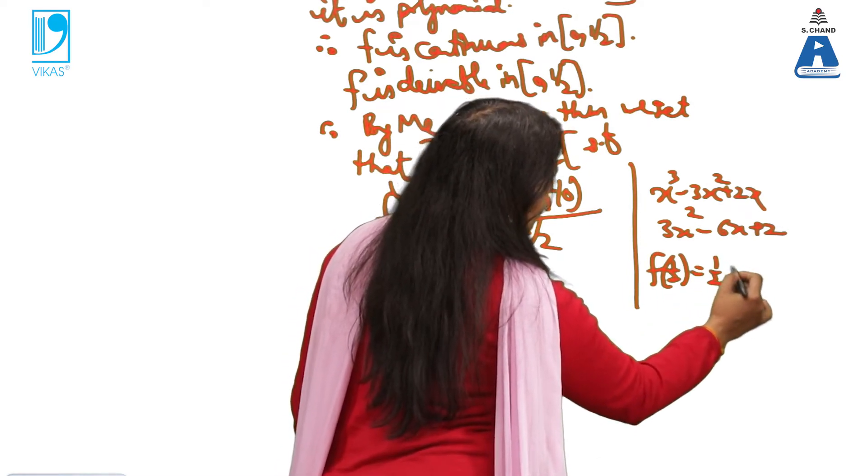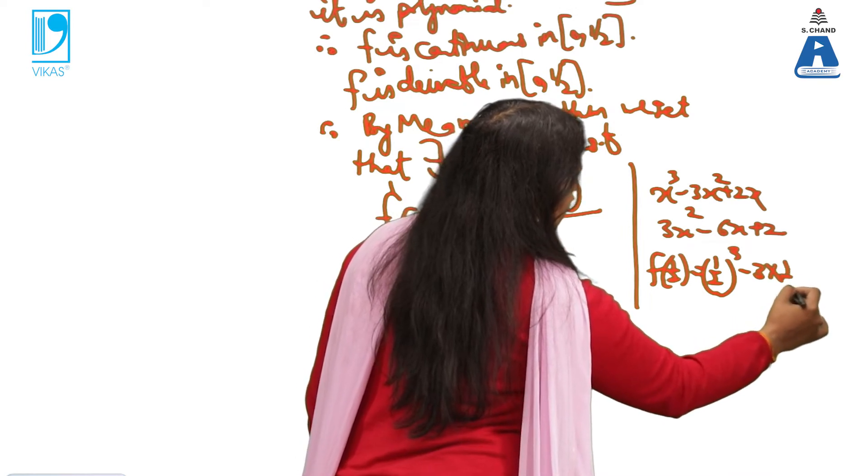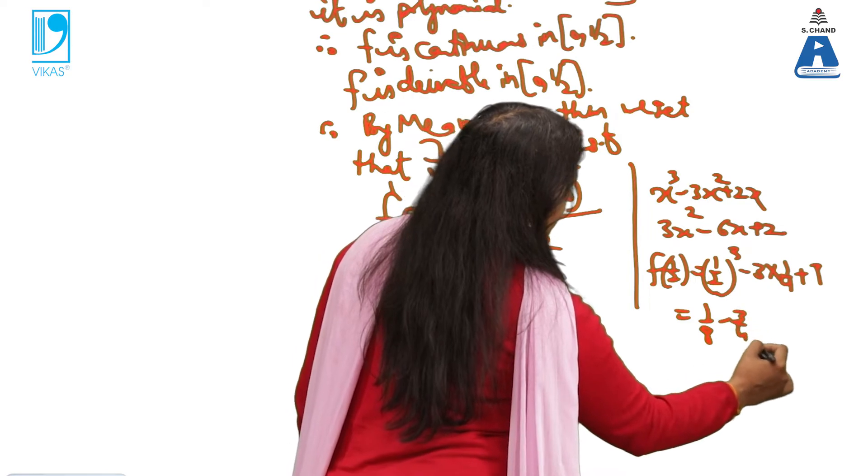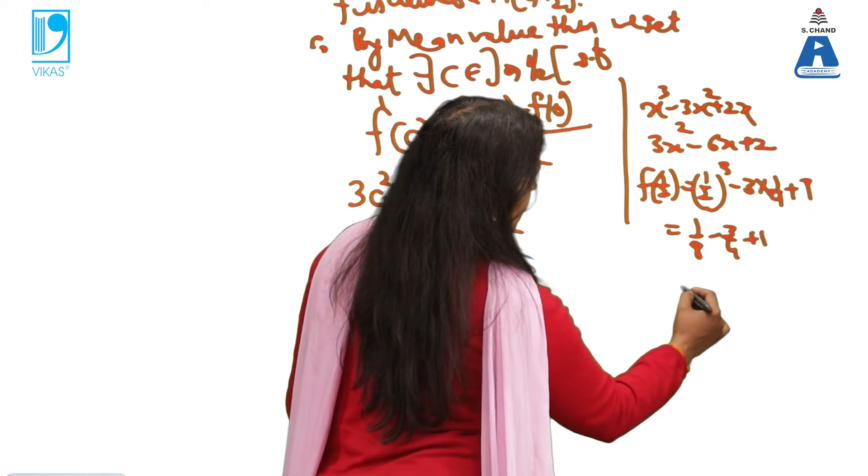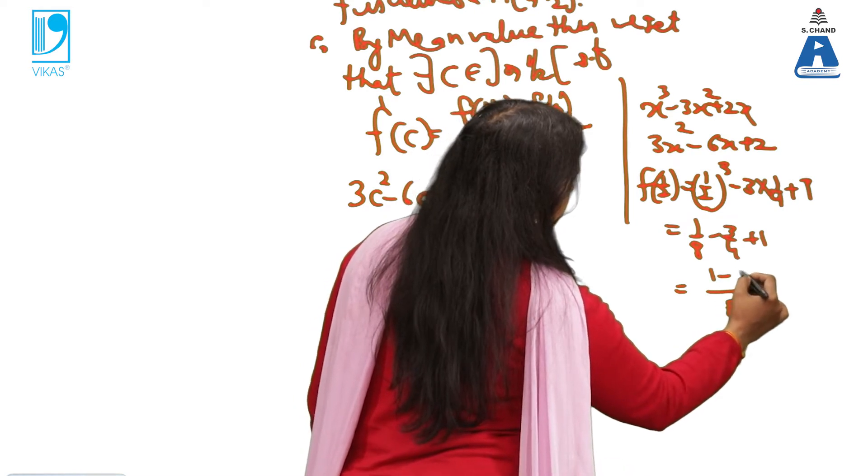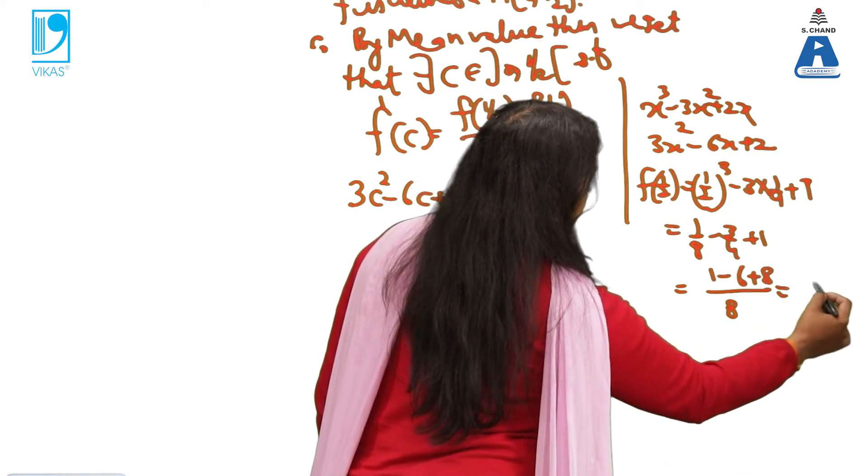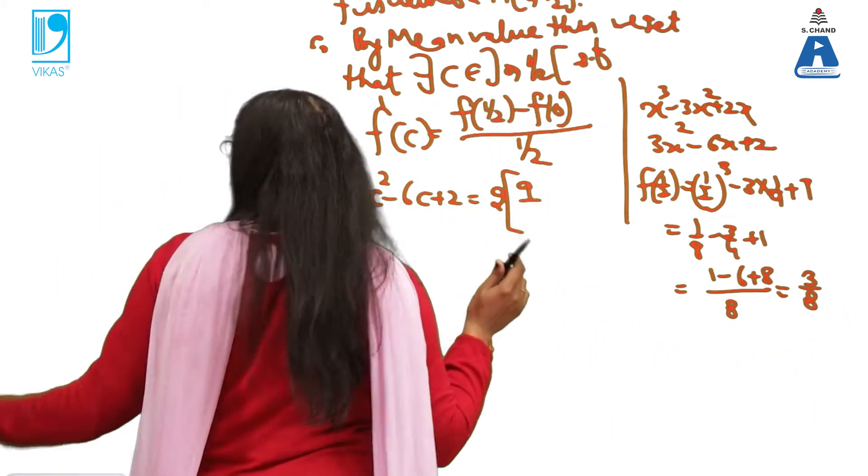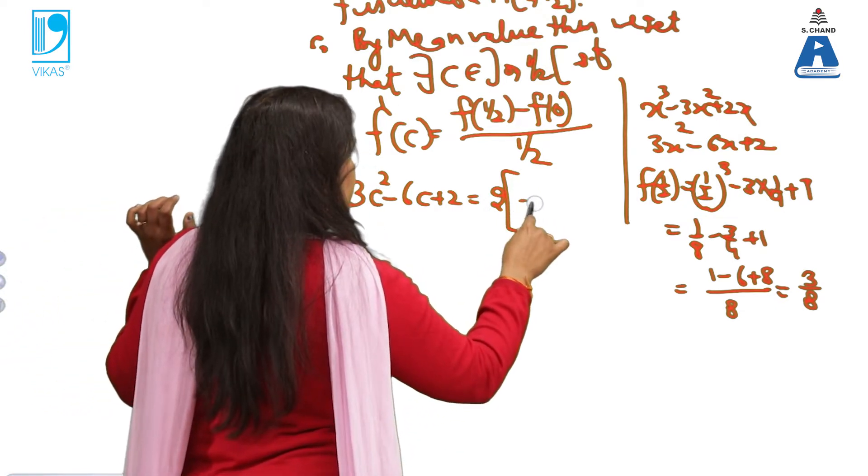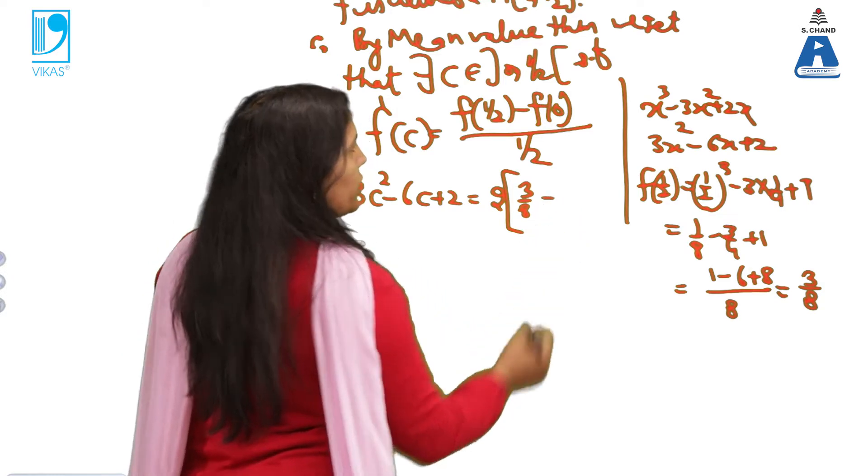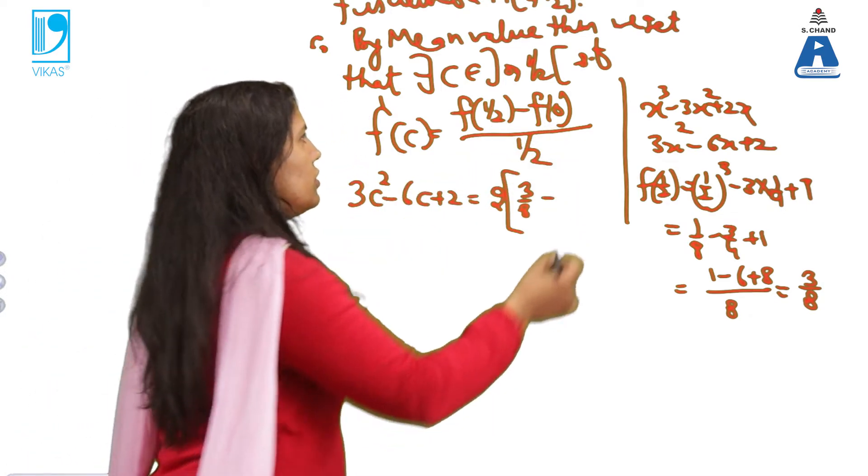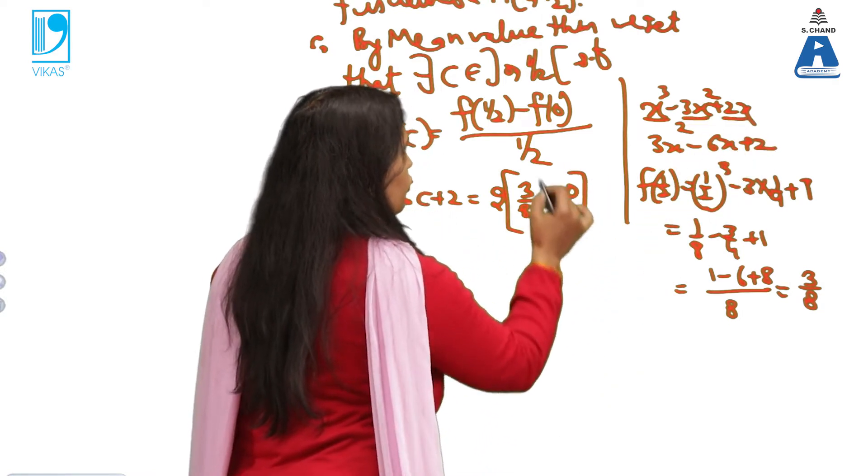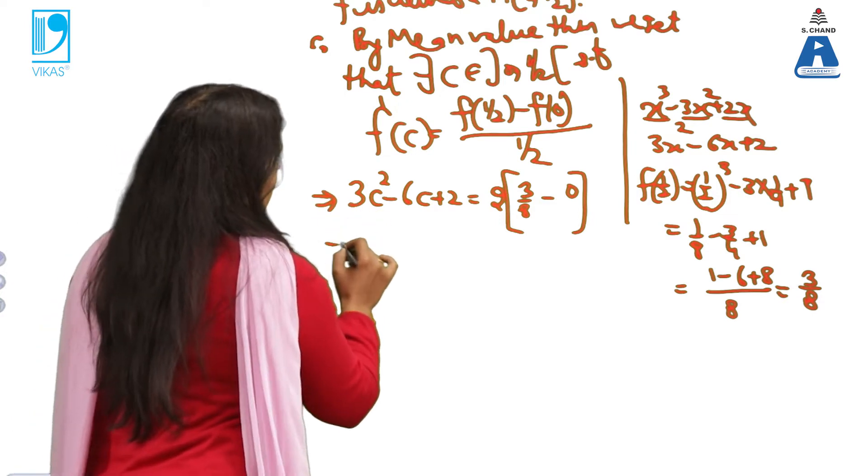f(1/2) value will be (1/2)³ - 3(1/4) + 1. So 1/8 - 3/4 + 1. So 1 - 6 + 8. So 9 - 6 that is 3/8 is my f(1/2). f(0), because completely we have x in each term, you can see here we have x, x, x. So it will be 0. And this I have already adjusted. So now I will simplify.